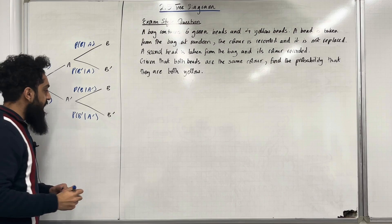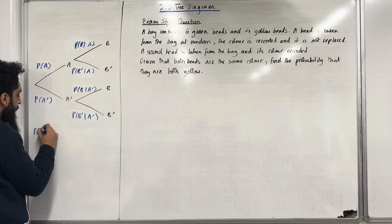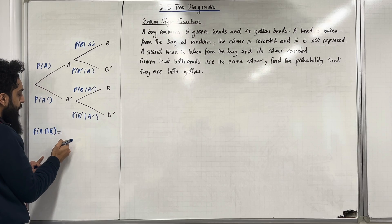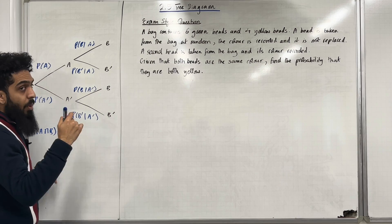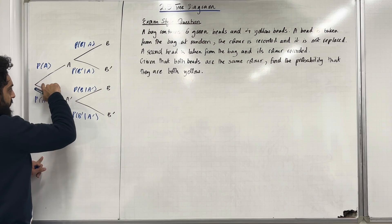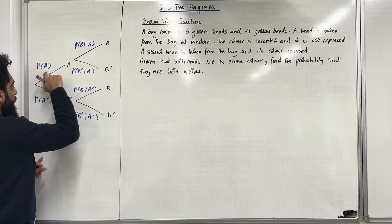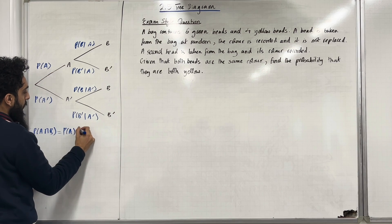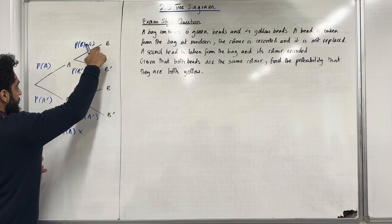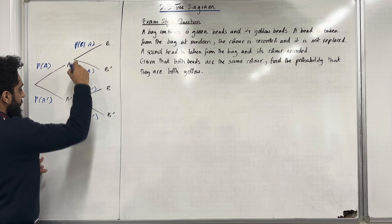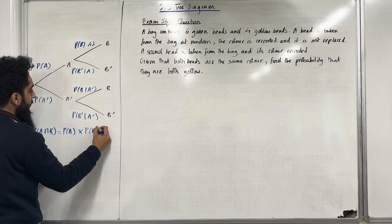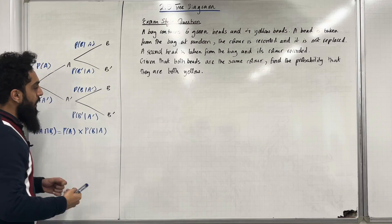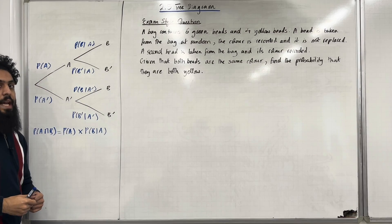Suppose we want to calculate the probability of A intersect B from the tree diagram. All we need to do is go across the branch A, which represents probability A, multiplied by going across the branch B, which represents probability B given A. So these are the important concepts of a tree diagram.